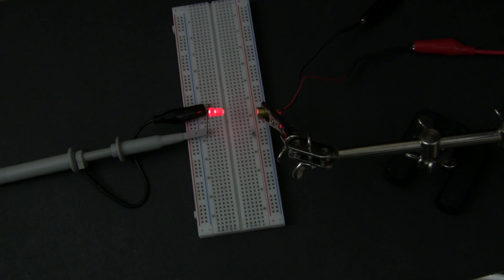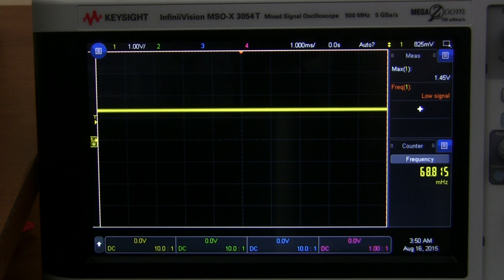Now if we shine the laser onto the LED, we get a DC voltage appearing on our oscilloscope. It's 1.5 volts, which is roughly the same as the LED voltage.